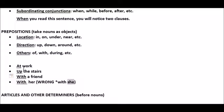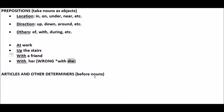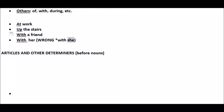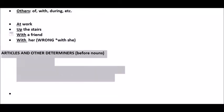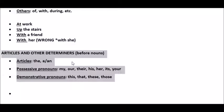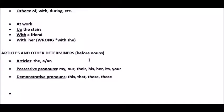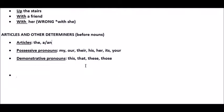We next have, and last but not least, articles and determiners. These include a number of categories we'll cover briefly here. Articles: the, a. And possessive pronouns such as mine, our, and such. And demonstrative pronouns: this, that, these, those. What we can do with these is put them in front of nouns.